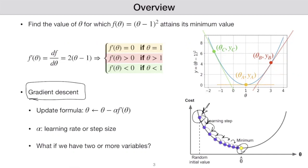Let's look at the mathematical expression for the update formula. We have a current solution, that's theta. Then you need a step size or a learning rate, which is alpha — this tells you how big each step is. And because we are going towards the opposite of the derivative, that's why we have a negative sign. Then we multiply this by the derivative of this function at the point theta. This gives us the next value for theta, and we can continue this as many times as we want.